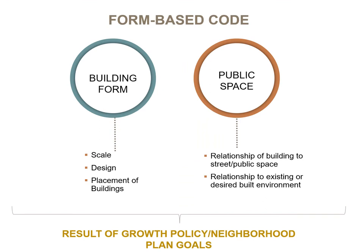Put simply, a form-based code is a way to regulate development that controls building form first and building use second. Form-based codes are based on a deep understanding of place, articulated in a master plan or area plan with a clear vision of how a place will look and function. Urban form and public realm are central to form-based codes, but absent from the traditional zoning vocabulary. While architecture is about building design, urban form is about the physical design of cities — how the pieces fit together. In form-based code, building form refers to the scale and placement of buildings as well as some design features.